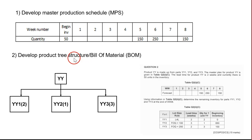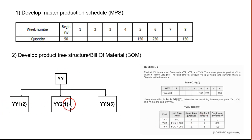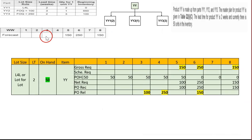Next, we draw the bill of materials or product tree structure. To produce YY, we need two units of YY1, one unit of YY2, and three units of YY3. So we now have the bill of materials.